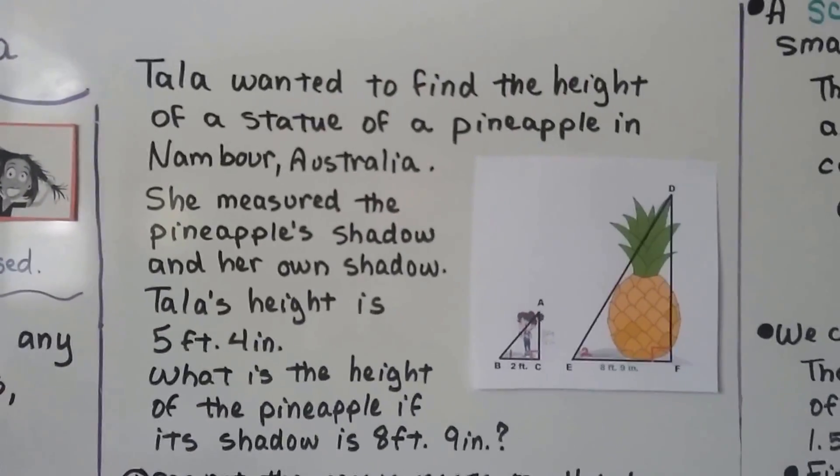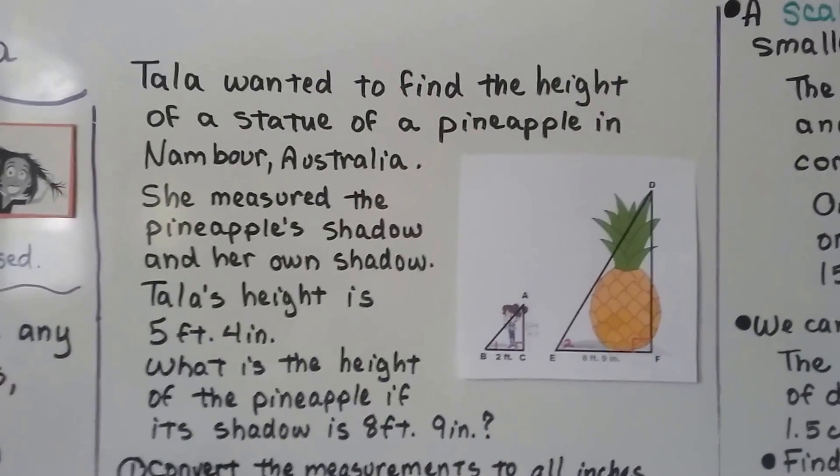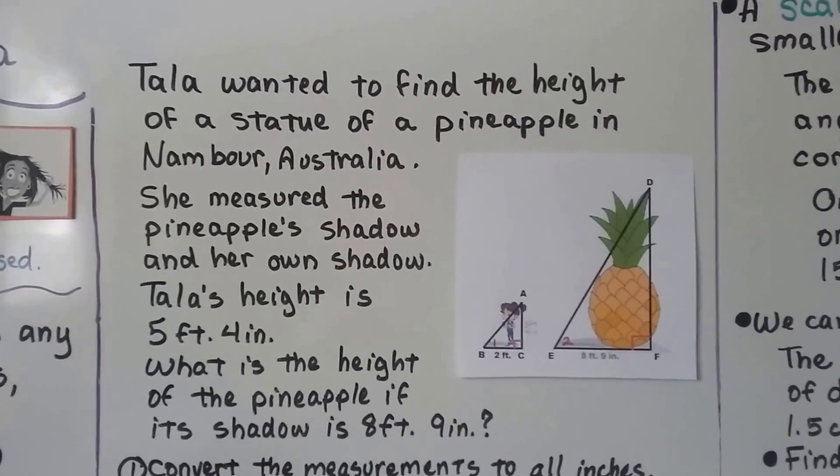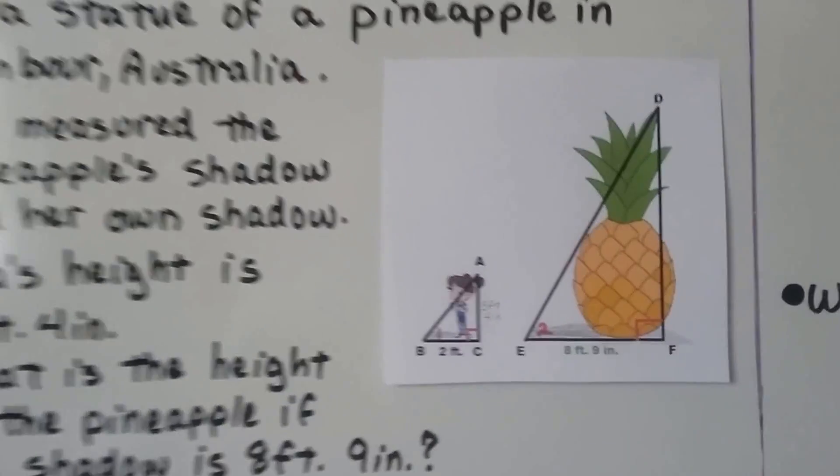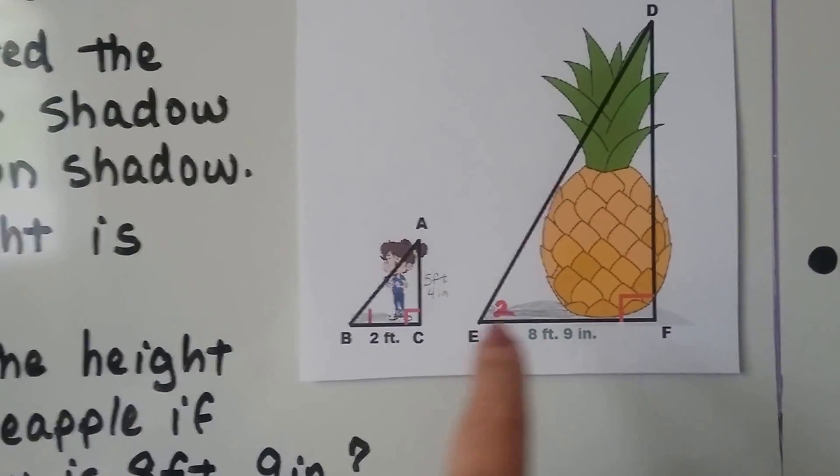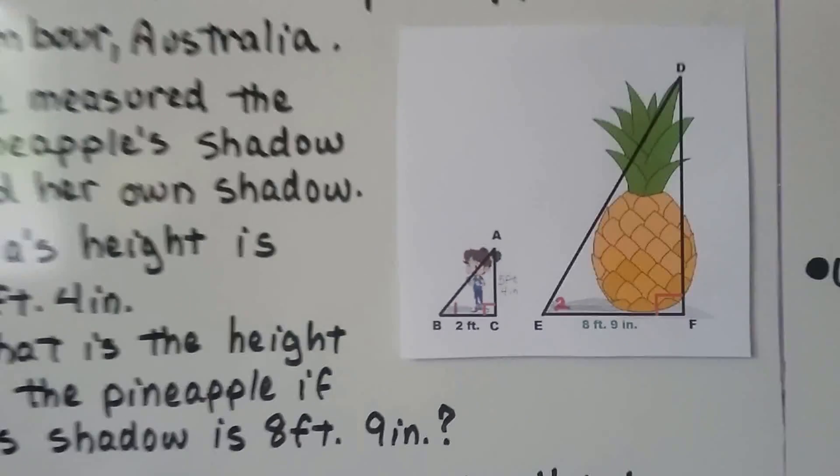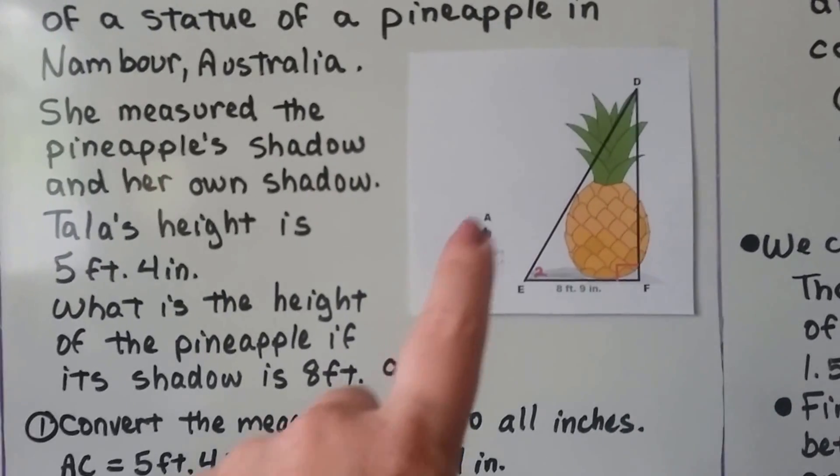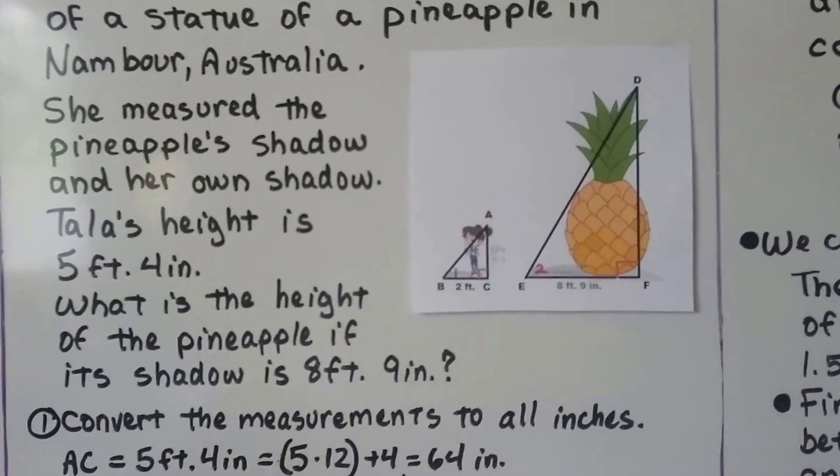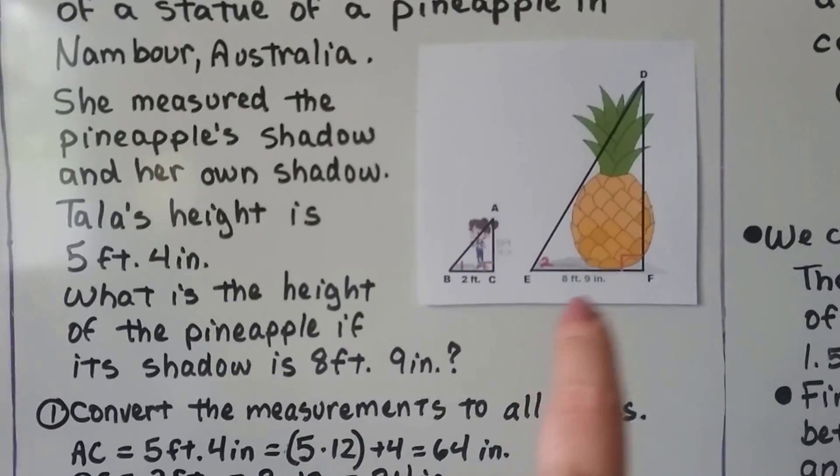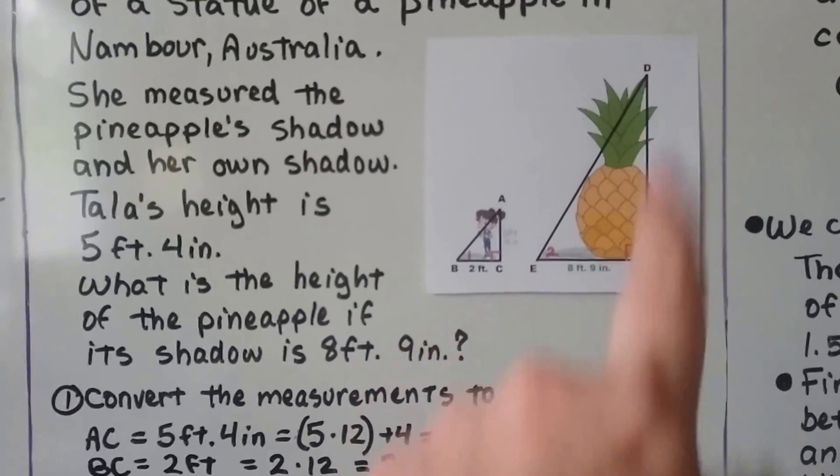Natala wanted to find the height of a statue of a pineapple in Nambour, Australia. She measured the pineapple's shadow and her own shadow. The pineapple's shadow was 8 feet 9 inches and her shadow was 2 feet. Natala's height is 5 feet 4 inches, that's AC. So what's the height of the pineapple if its shadow is 8 feet 9 inches? We need to find DF.